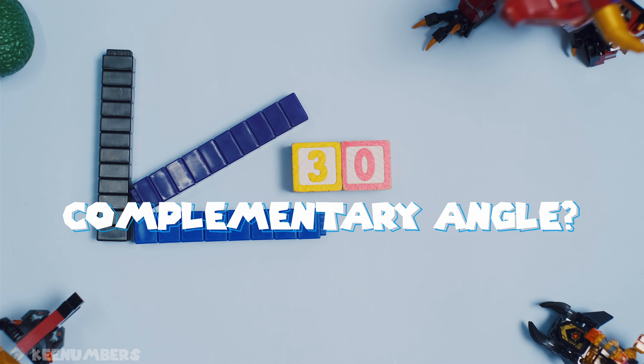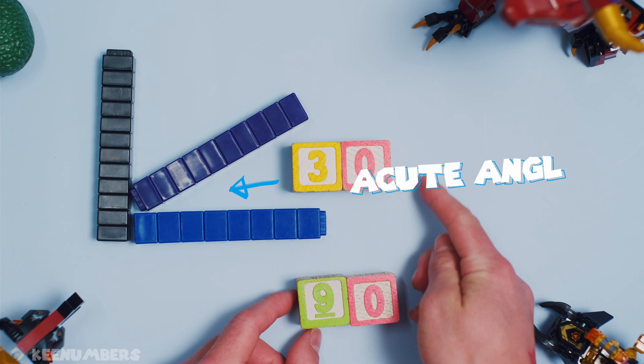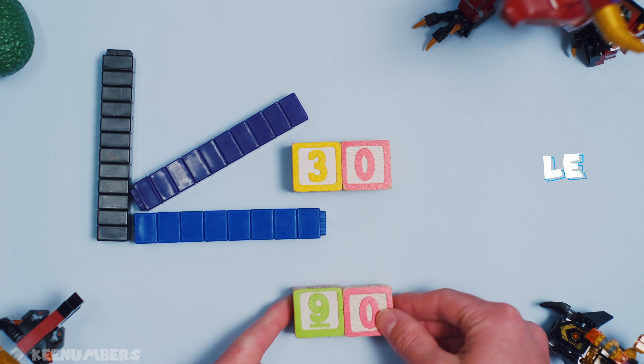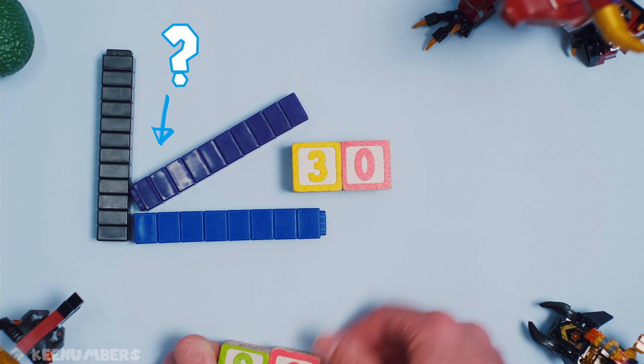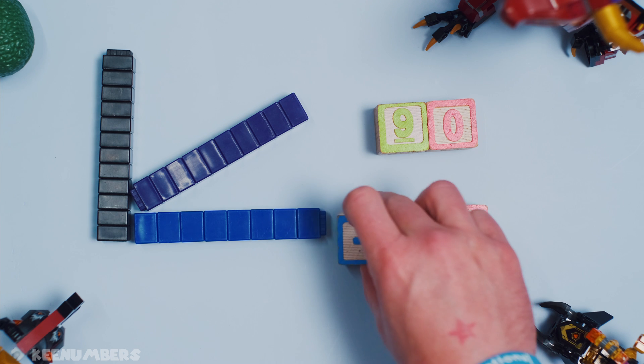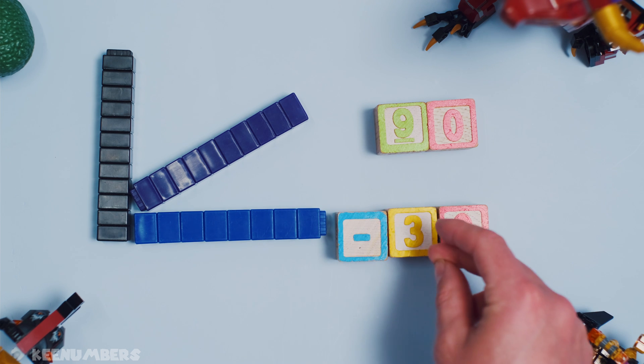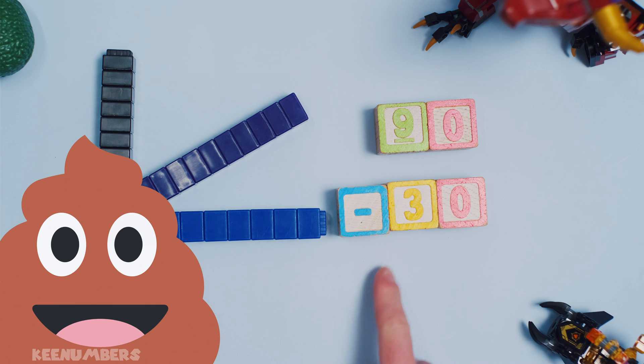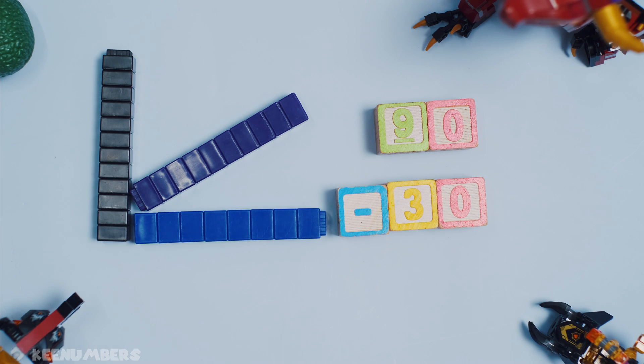In other words, we want to know when you add 30 and that number you get 90 degrees. In other words, you're just asking for 90 minus 30. That's gonna give you the difference here, the complementary angle.